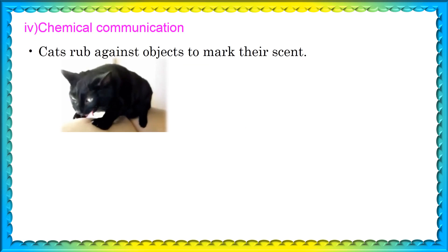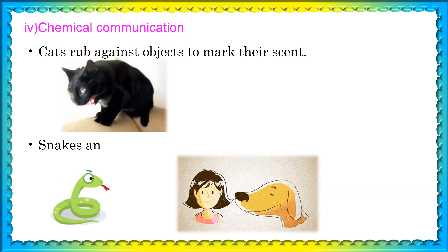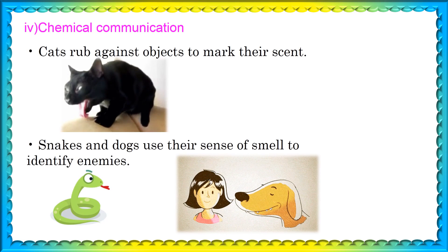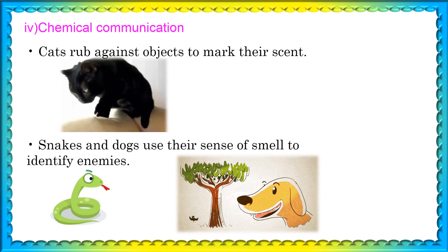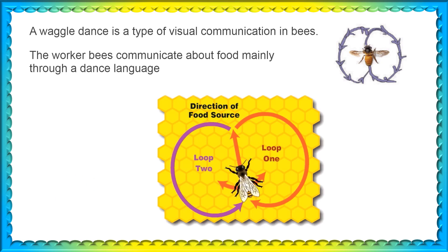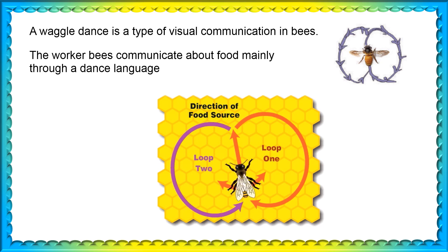The final one is chemical communication. Cats rub against objects to mark their scent. Snakes and dogs use their sense of smell to identify enemies. Using this, police use dogs to catch thieves. The waggle dance is a type of visual communication in bees — the worker bees communicate about food mainly through a dance language called the waggle dance.